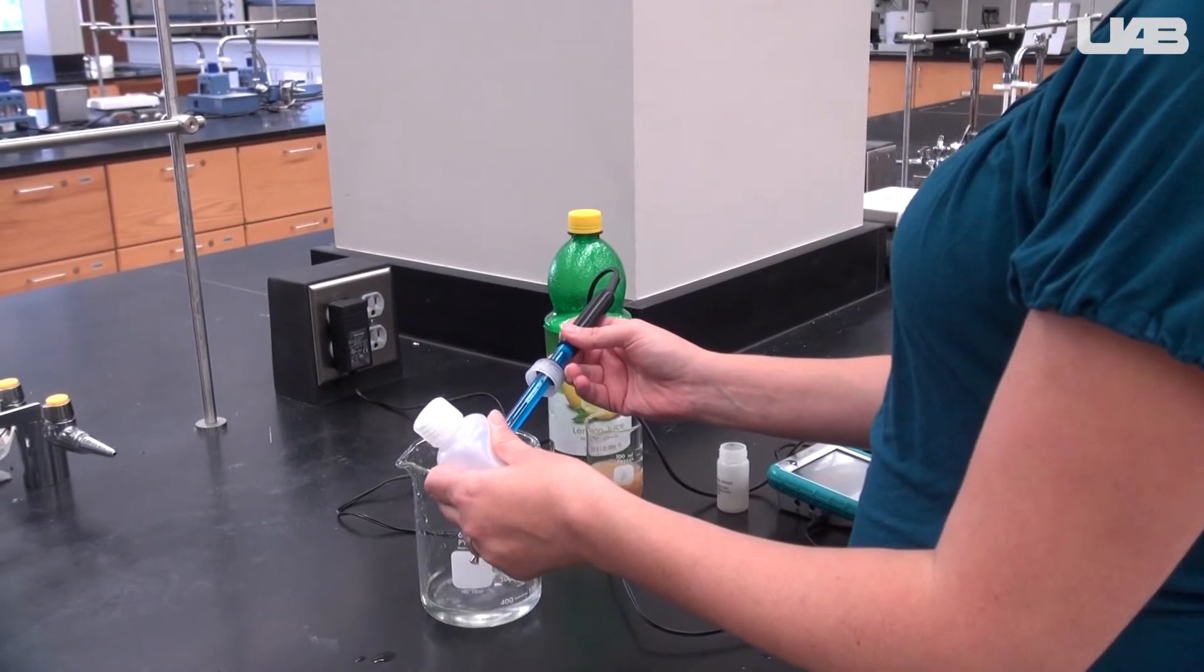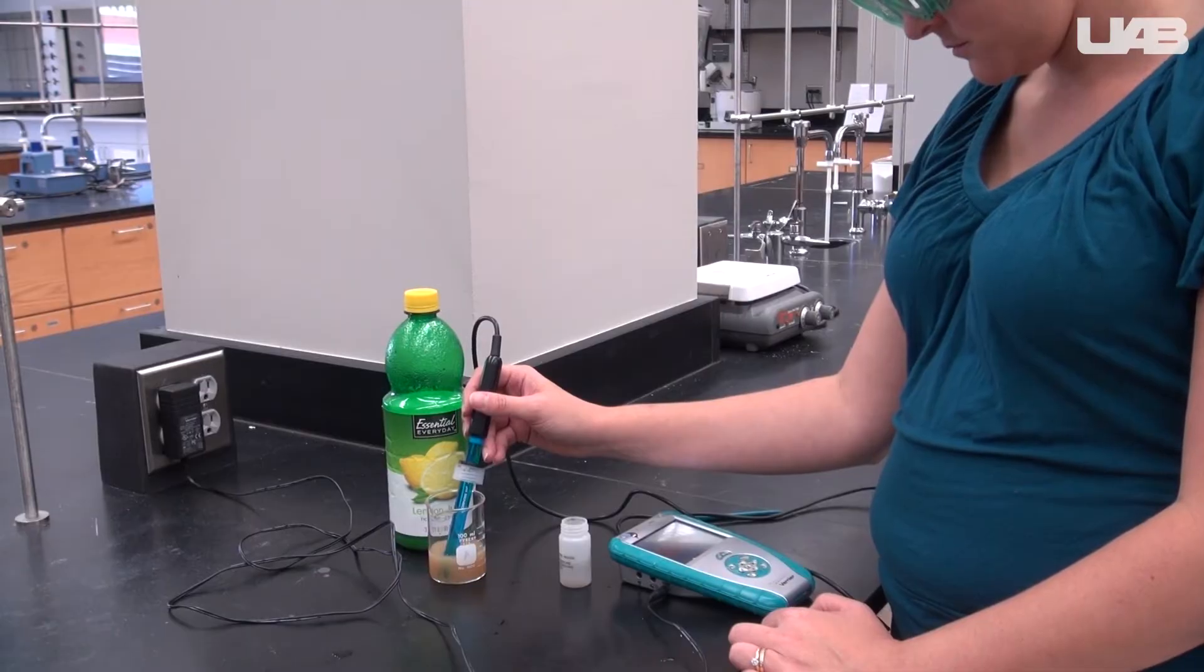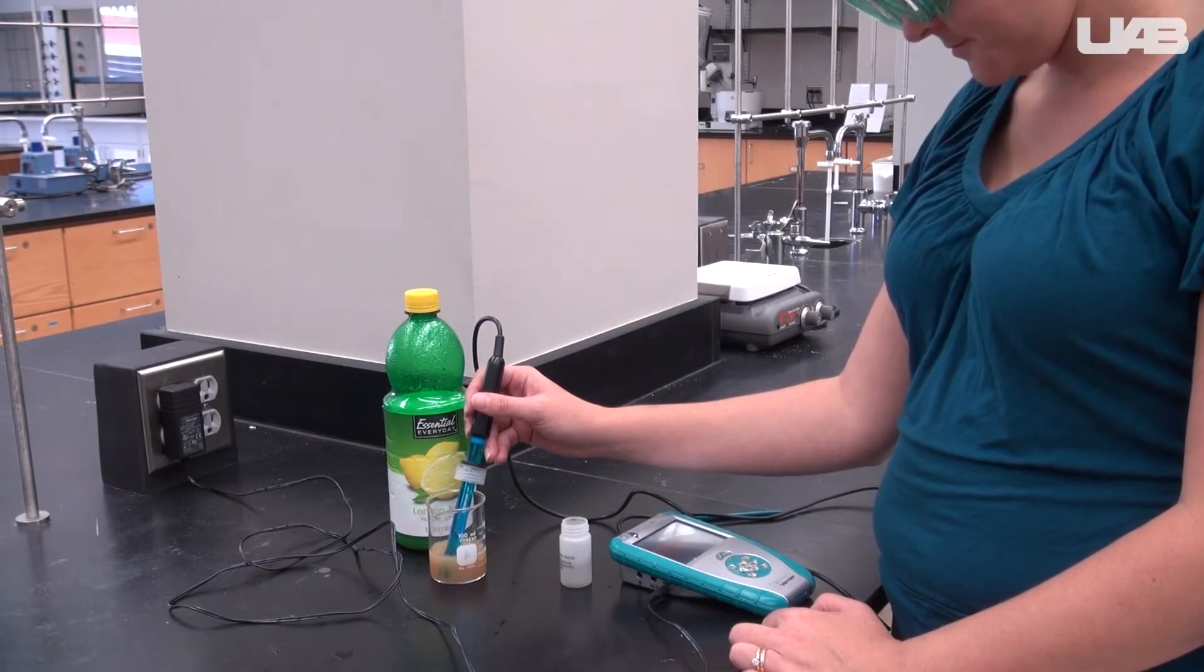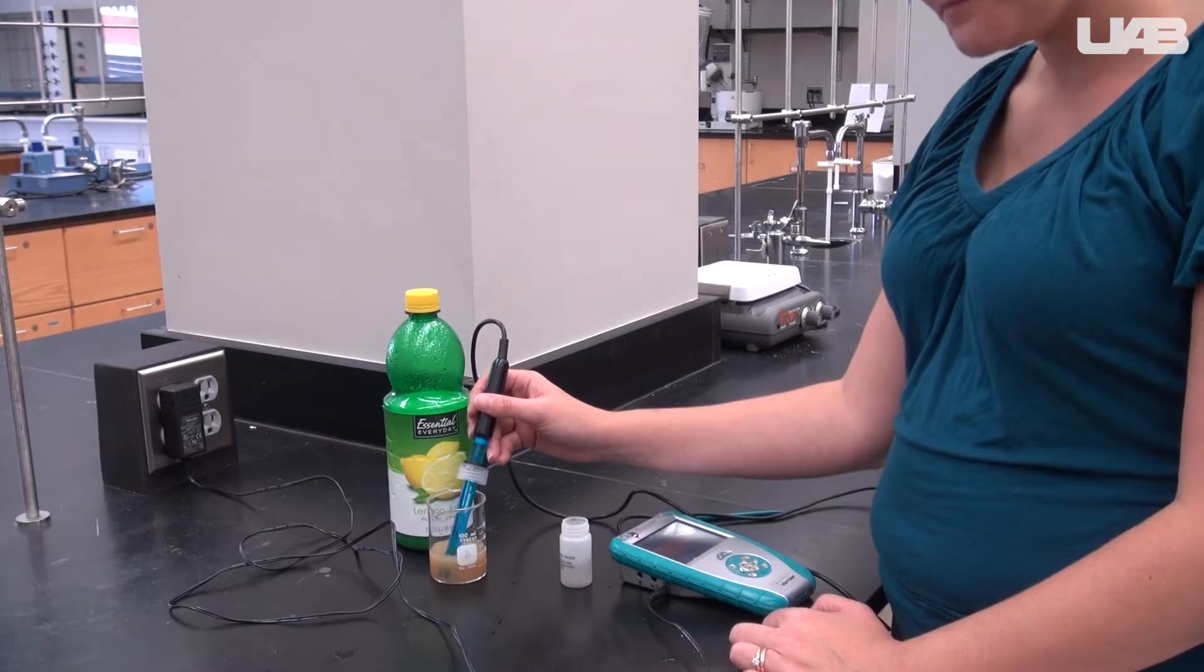Rinse your pH meter between each solution. During Exercise 1, you will be collecting pH measurements for a series of common household solutions, such as orange juice or ammonia.